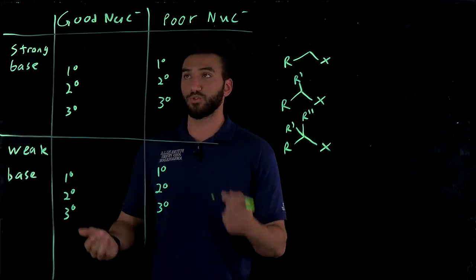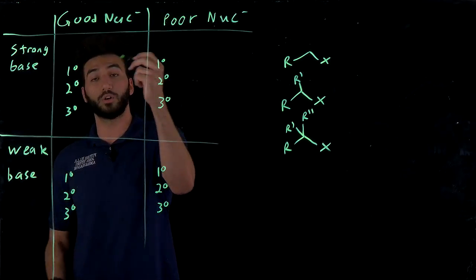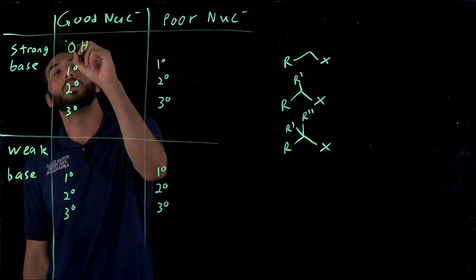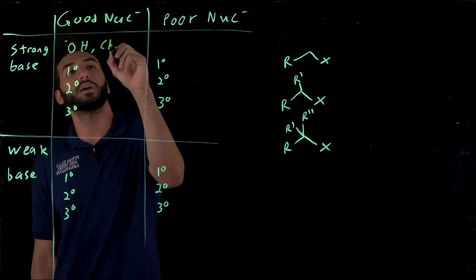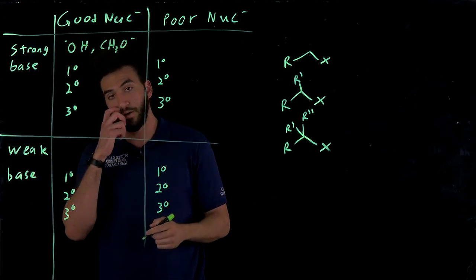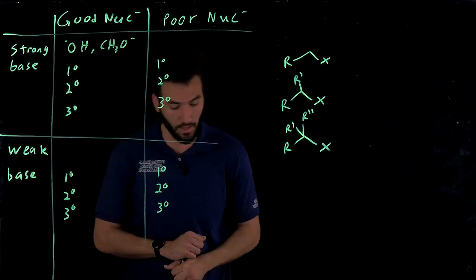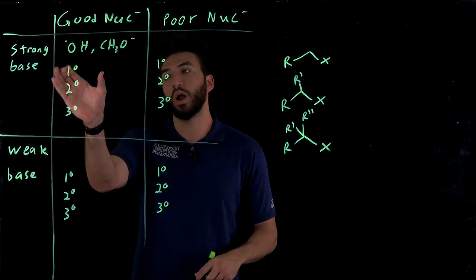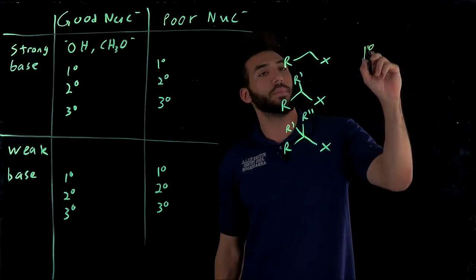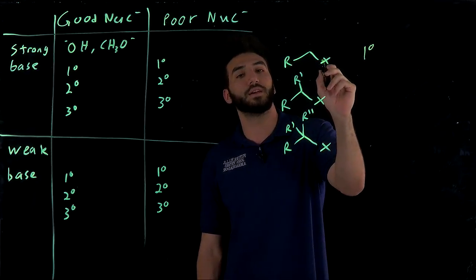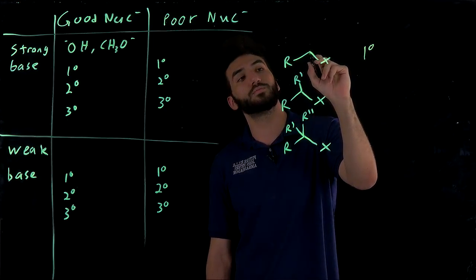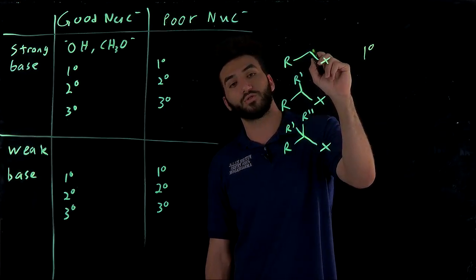So examples of strong bases that are good nucleophiles are things like OH- and CH3O-. These are good nucleophiles that are also strong bases. So if we have a primary carbon, which I've done here, so this is primary, basically primary alkyl halide, by saying this is your halide and this is the carbon in question.